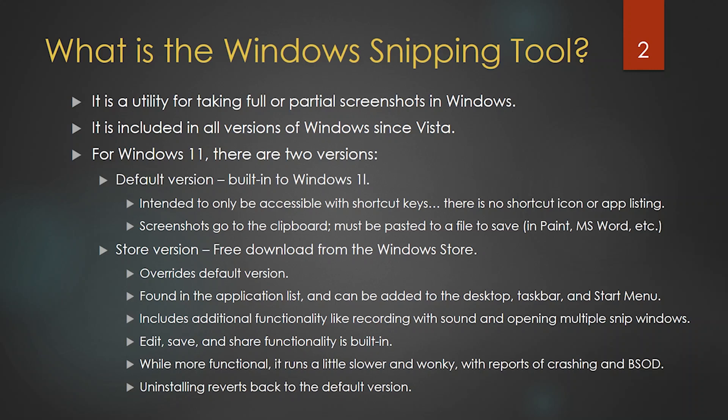When you take a screenshot with the Windows Snipping Tool it goes to a place in memory called the clipboard, where you then must use a second application to paste it into a file. For that purpose most people use either Microsoft Paint, Microsoft Word, or applications like that.